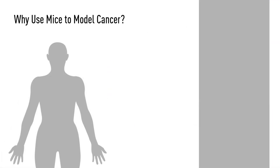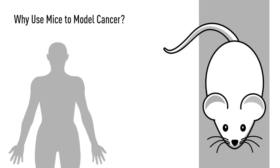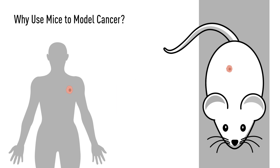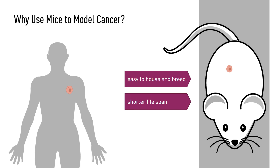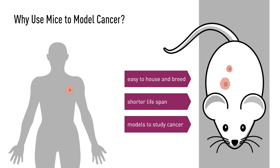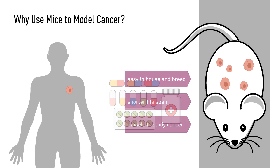Genetically and biologically similar to humans, mouse models improve preclinical research and help find cures for disease by allowing scientists to study cancer in a living organism as opposed to a tissue culture dish. Mice are relatively easy to house and breed and have a shorter lifespan. Genome sequencing and genetic engineering capabilities allow researchers to create mice that can be used to study cancer initiation and progression or to test new therapies safely.